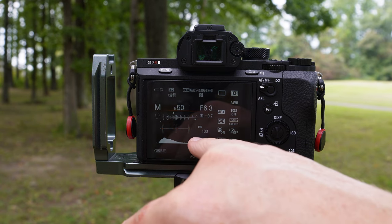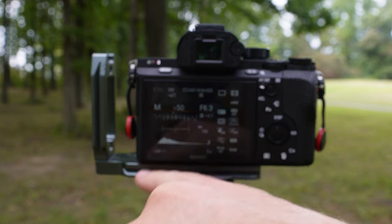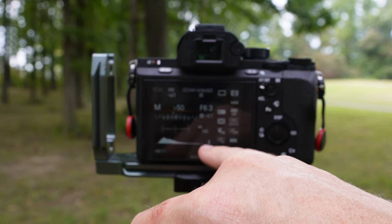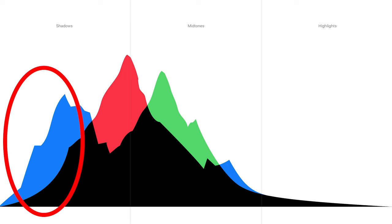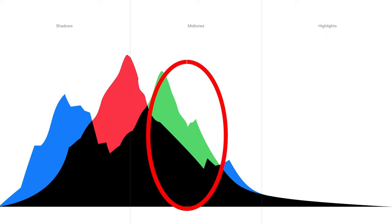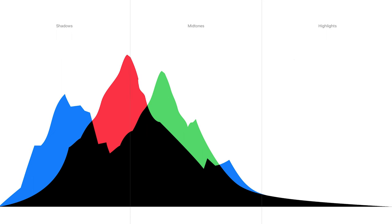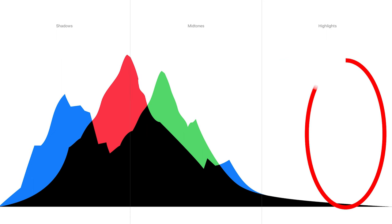It's a representation in graph form of where the light is in the image. On the far left you have blacks, then you have your shadows, in the middle you have your midtones, then you have your highlights, and all the way to the right you have your whites.